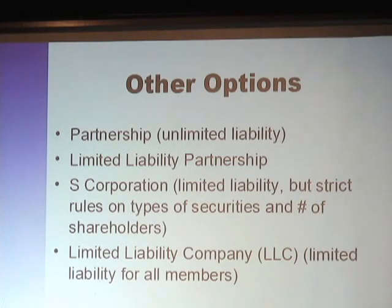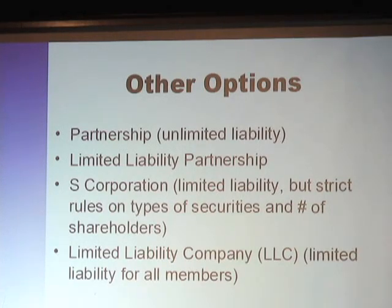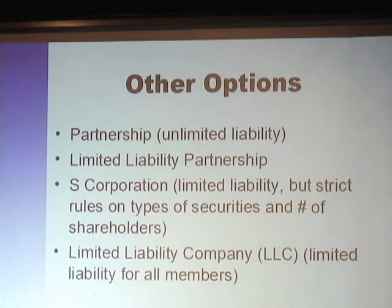Other options: a general partnership has unlimited liability. A limited liability partnership offers some limited liability. An S corporation has limited liability but strict rules — you can only have one class of stock. You can have voting and non-voting common without violating the one-class rule, but if you have preferred stock, you blow the S election. Also, all shareholders must be individuals — if a VC comes in, you blow the S election. A limited liability company is very popular, but if you're going public or being venture-backed, they'll make you convert to a C corporation anyway.